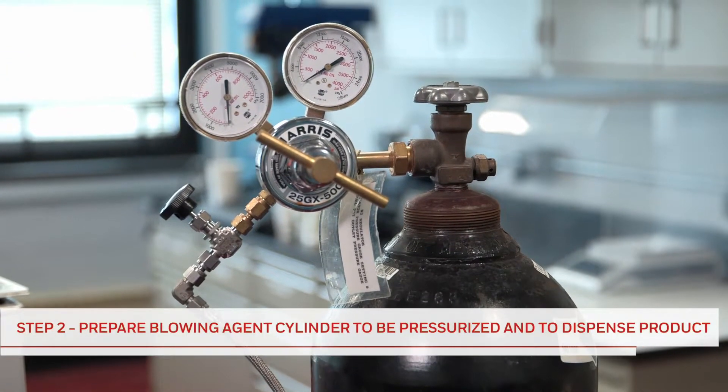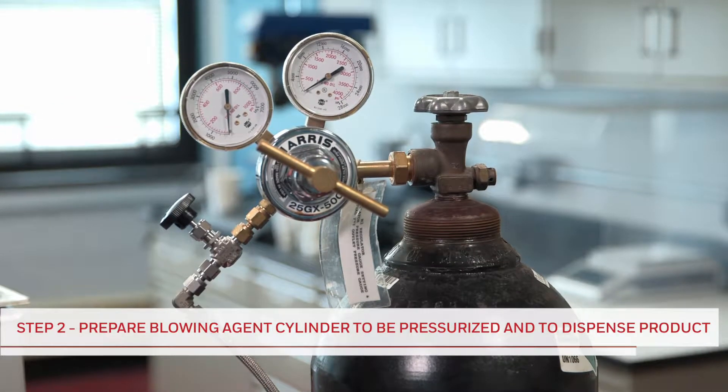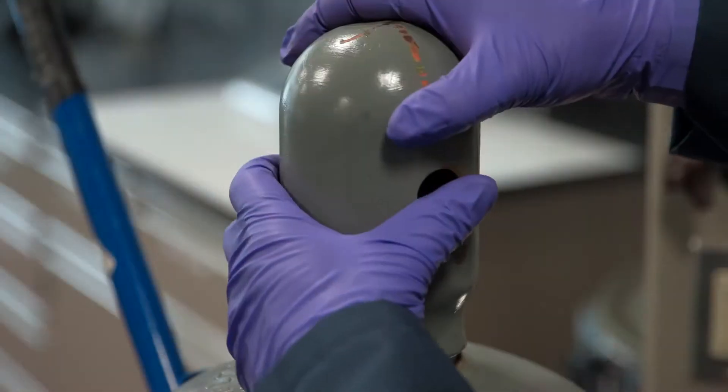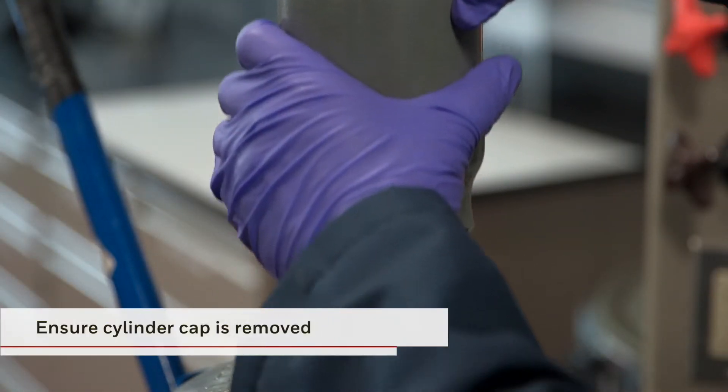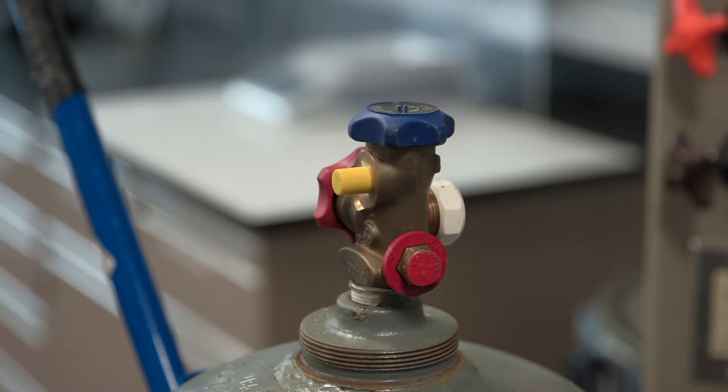Now that the nitrogen tank is ready, the next step is to prepare the blowing agent cylinder to be pressurized and to dispense product into the process container. Start by removing the cap from the blowing agent cylinder, if this had not already been done. You will see two handles and two ports at the top of the cylinder.